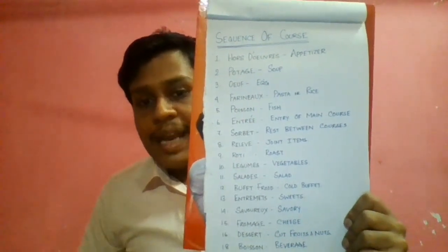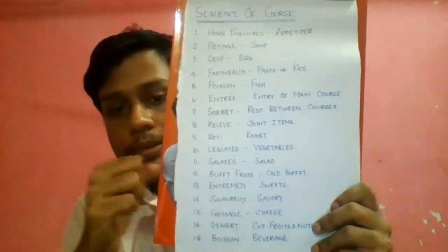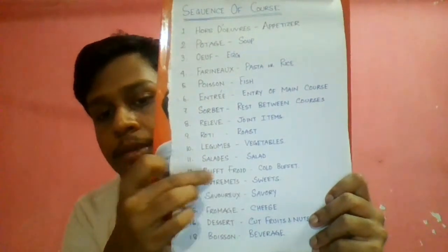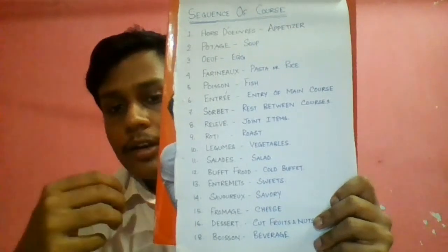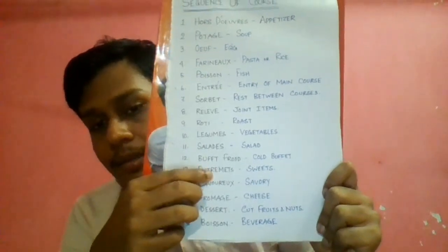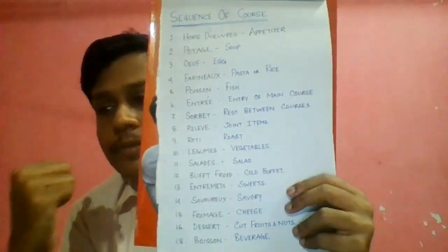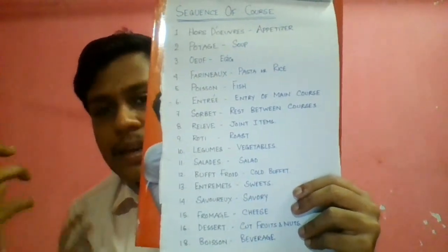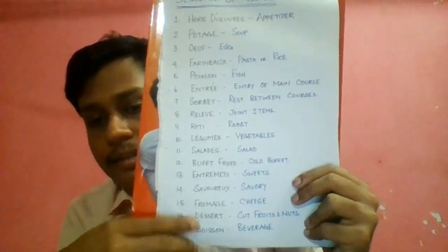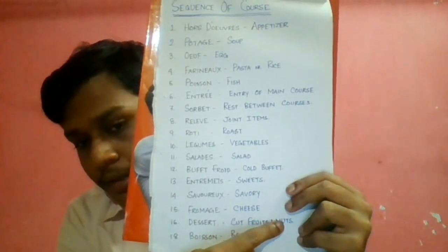Relevé means joint items — maybe beef ribs, lamb ribs, etc. Rôti means roast items. Légume means vegetable items. Then salad. Then Buffet froid — cold buffet items like beef tenderloin, which are basically soft and cold. Next, Entremets means sweets. Then Savoury — savoury items which have their own pungent taste, like pickle or achars.